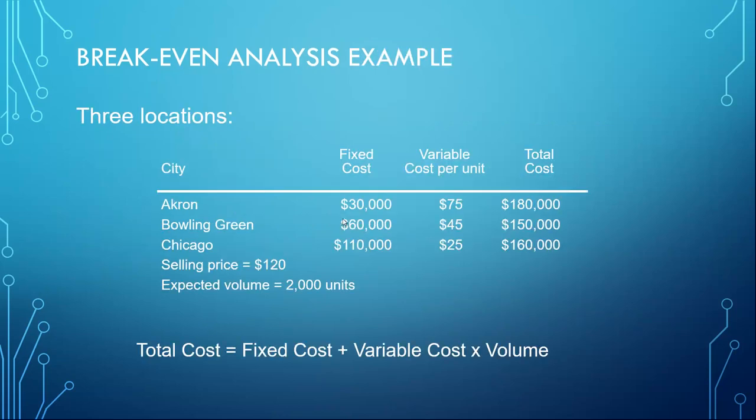The example in this slide explains the break-even analysis or the cost analysis through selecting a location out of three by comparing the total cost of each location. In the last method, we selected the location with the highest score. While in this method, we are going to select the location with the lowest cost. The fixed cost and the variable cost per unit are being provided. With selling price of $120 and expected volume of 2,000 units, the total cost will equal fixed cost for each location plus the variable cost per unit multiplied by the volume. The location with the lowest cost will be selected.